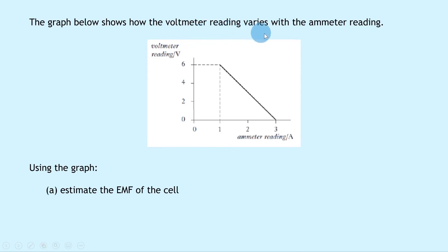The graph below shows how the voltmeter reading varies with the ammeter reading. So we've got a graph here of terminal potential difference or voltage against current, and we're given some dashed lines on the graph which is going to make it easier for us to choose some points later on if we need to.